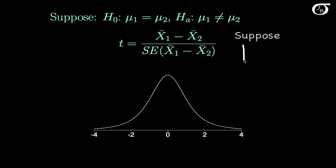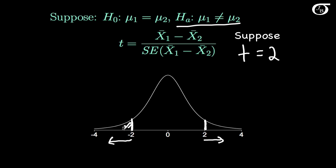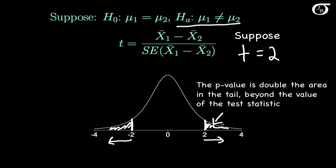For a two-sided alternative hypothesis with an observed t-statistic of 2, values far out in either the right or left tail give evidence against the null. We would consider a value of minus 2 equally strong evidence against the null. So the p-value is the probability under the null of getting the observed value or farther in the right tail, or minus 2 or farther in the left tail — the areas in both tails. Equivalently, the p-value is double the area in the tail beyond the observed value of the test statistic.